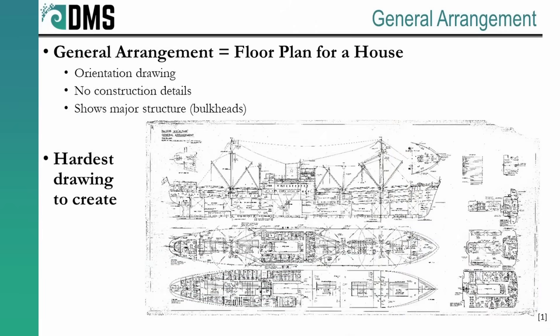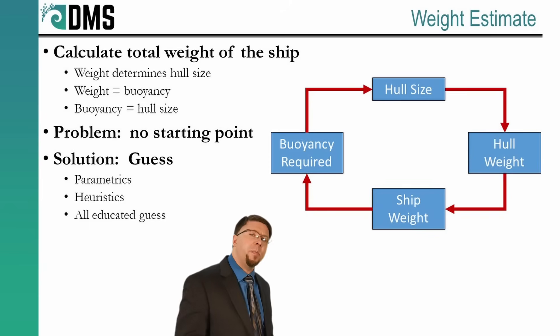First, a little clarity on that general arrangement drawing. This is the equivalent of the floor plan of a house — it doesn't show any specific construction details. It shows the major bulkheads, the general shape of the hull, and floor layout on each deck. This is the starting drawing for any ship; it gets you oriented for anything else. It is also the hardest drawing to create when starting from scratch, because it contains bits and pieces of every component of the entire ship design. The general arrangement drawing is the end product, not the process.